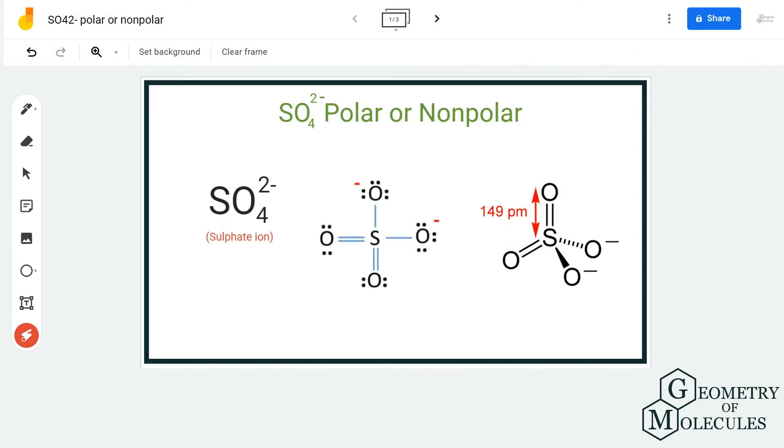Hi guys, welcome back to our channel. In today's video we are going to determine the polarity for SO4 2- ion. It is also known as sulfate ion. To determine its polarity, we are first going to look at its Lewis structure.